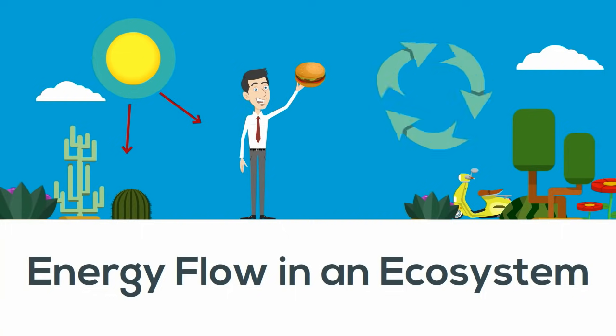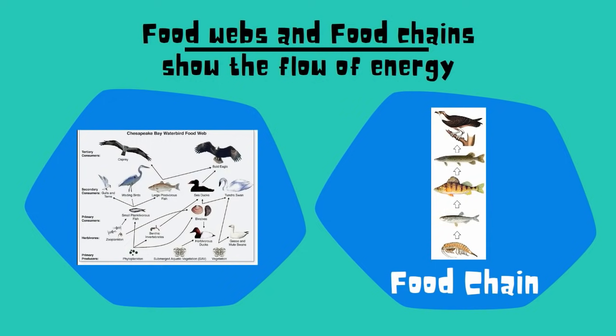As a result, energy flows in ecosystems. This flow of energy can be represented with food chains and food webs. For most ecosystems, the ultimate source of energy is the sun, and as you move from one organism to another, you move up a trophic level.